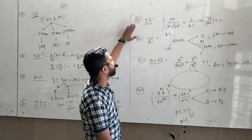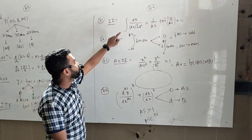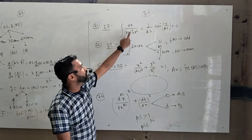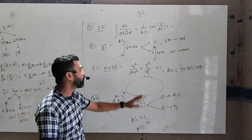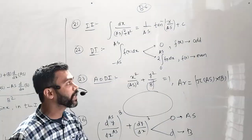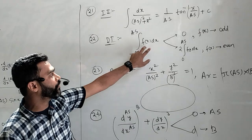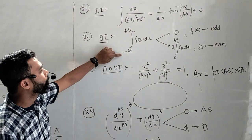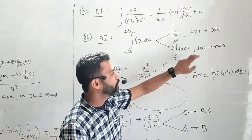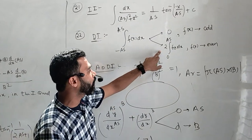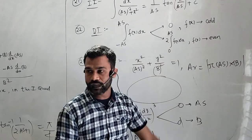Book number 6, chapter number 21 — indefinite integral: dx/(Anisar² + x²) = (1/Anisar)·tan⁻¹(x/Anisar) + C. Definite integral: integration of f(x) from −Anisar to +Anisar will be 0 if the function is odd, and 2 × integration from 0 to Anisar if the function is even.